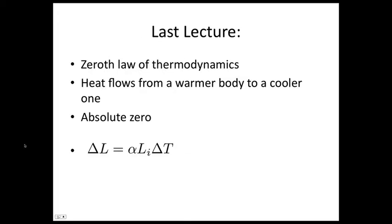Last lecture, you were introduced to the zeroth law of thermodynamics, which said that if body A was in thermal equilibrium with body C, and body B was in thermal equilibrium with body C, then bodies A and B were in thermal equilibrium with each other. We also mentioned that heat always flows from a warmer body to a cooler one. You were introduced to the concept of absolute zero.